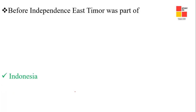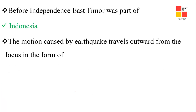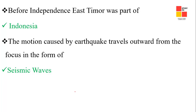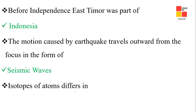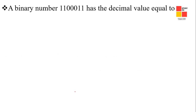Next question: before independence, East Timor was a part of Indonesia. Next question: the motion caused by an earthquake travels outward from the focus in the form of seismic waves. Next one: isotopes of atoms differ in the number of neutrons.